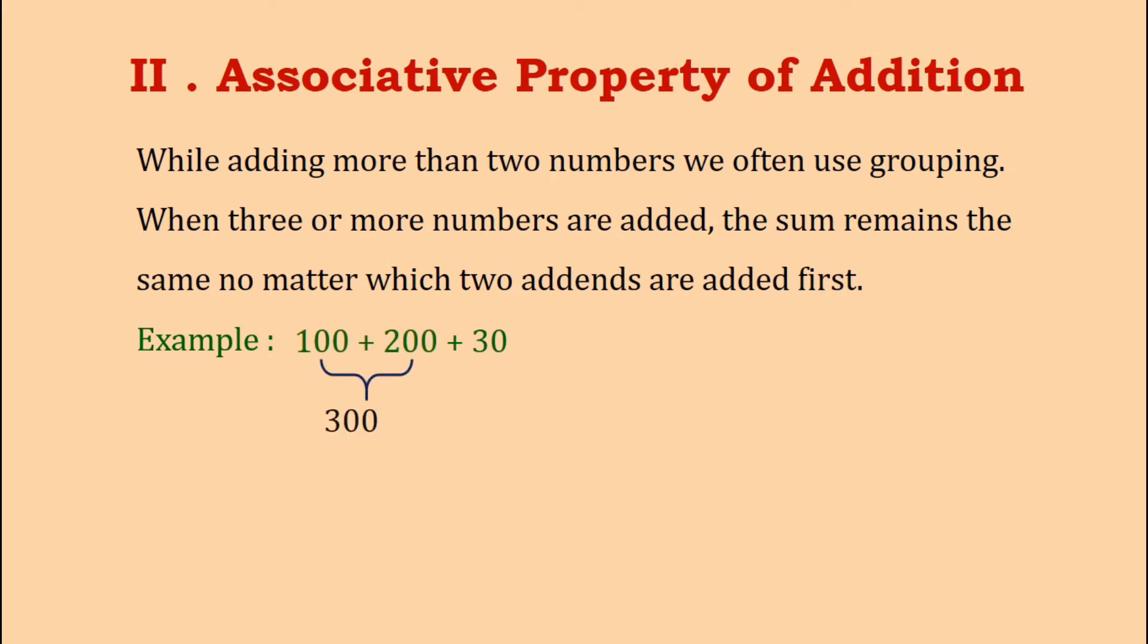Now, we will add 30 to 300 and we get the final sum as 330. Now, using the same set of addends, let us see what answer we get if we first add 200 and 30.